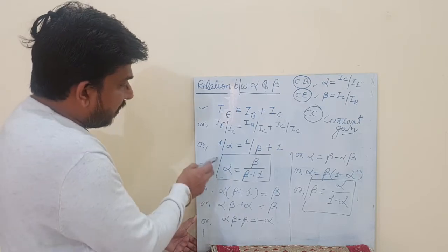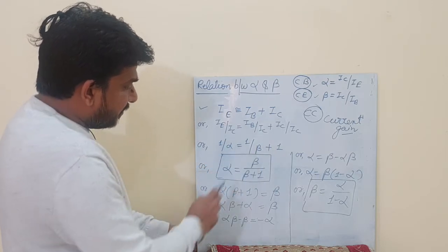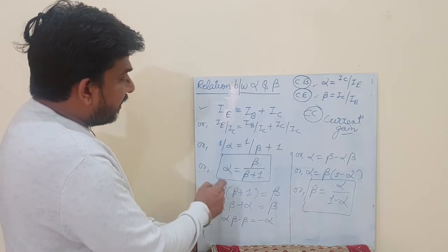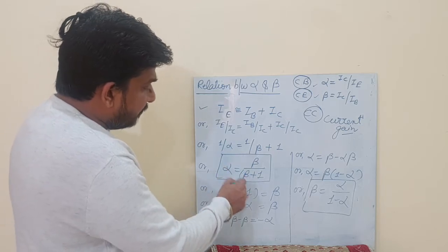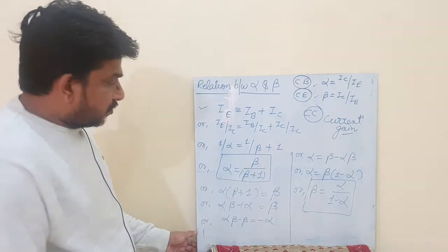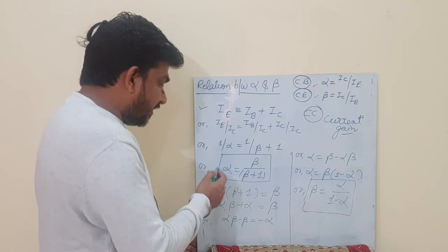So now we can write: 1 upon alpha equals 1 upon beta plus 1. We will find out that alpha equals beta upon beta plus 1. This is how we can calculate alpha.